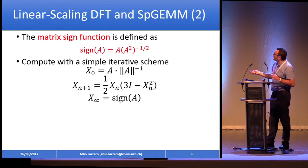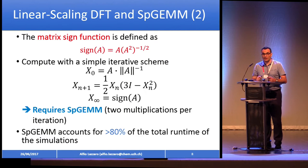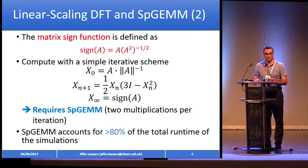The matrix sign function can be evaluated using an iterative schema, and the key point is that it always requires sparse matrix algebra: you have two multiplications per iteration to solve these problems. For the entire simulation, SpGEMM takes 80% or more of the entire computation. So at this point, I hope you understand why we really need an efficient and high-performing library for sparse matrix multiplication.